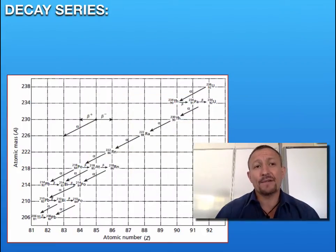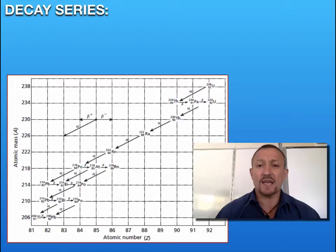What we get is this subsequent situation where we get one equation after another equation, after another equation, until the final element becomes stable. This can be shown in a graph or decay series as we can see here.